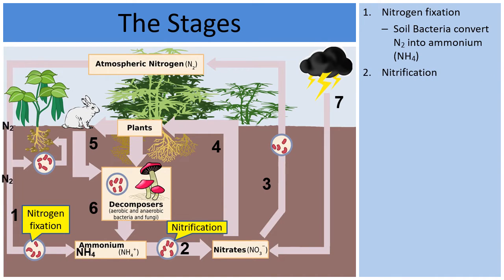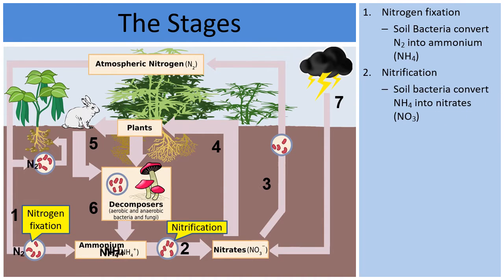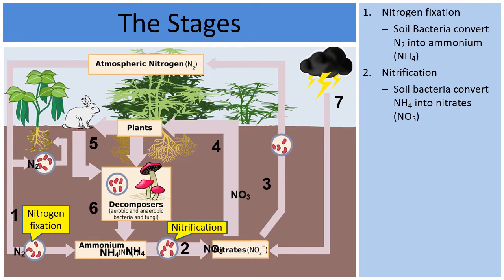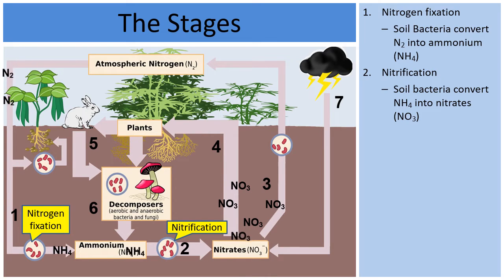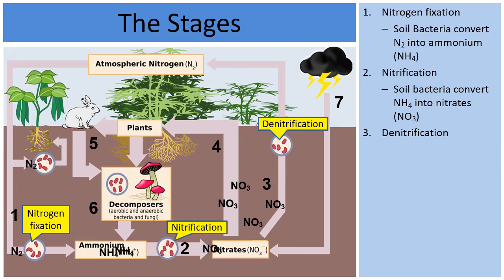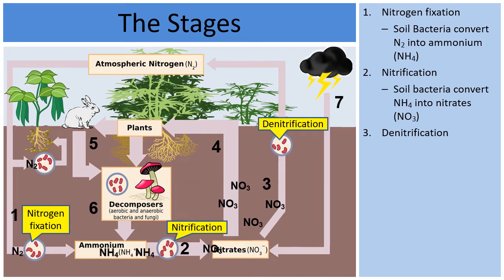Moving into area two, there are other soil bacteria that will take in the ammonium. Through a process called nitrification, they take in the NH₄ and produce nitrates (NO₃) as a waste product. Notice how the nitrates are accumulating just outside of area two.